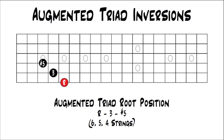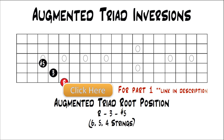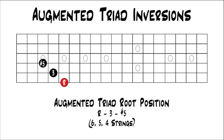This is part 2.9 from our series Music Theory for Guitar. If you'd like to go back and start at the beginning, you can click the link on the screen. In the last two lessons, we've been talking about triad inversions, and I showed you how to play them all over the fretboard.